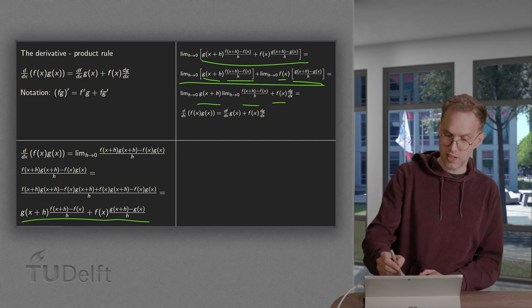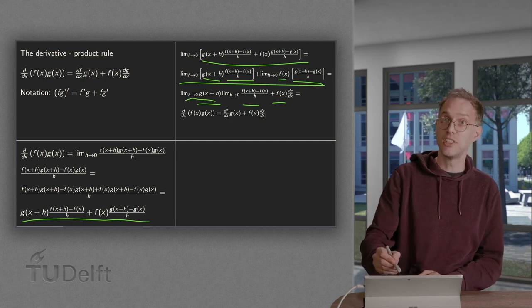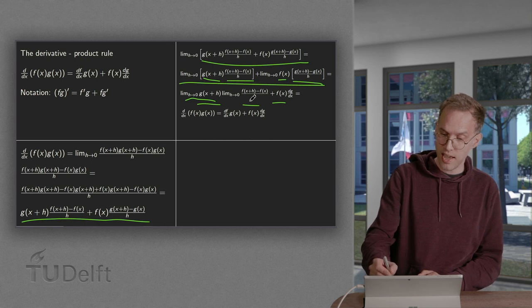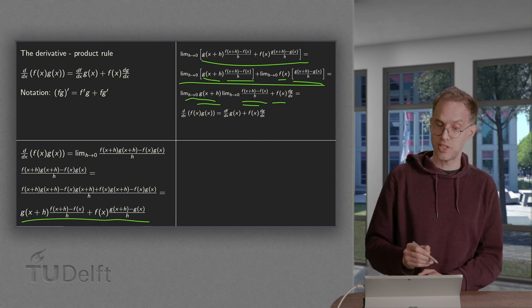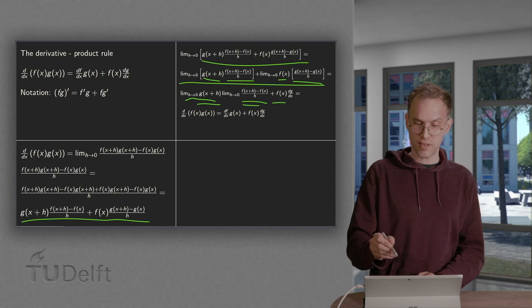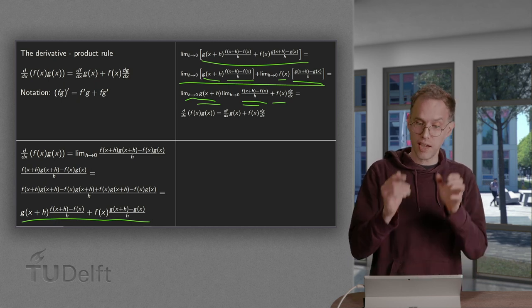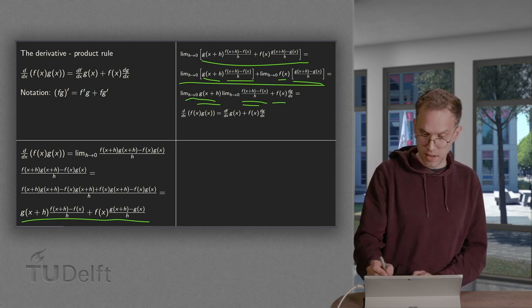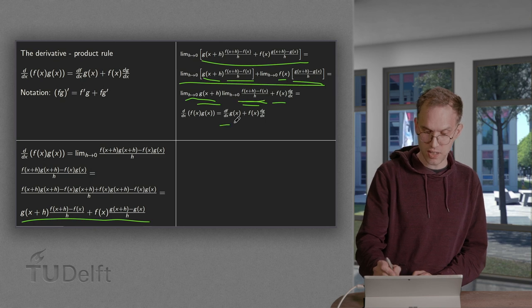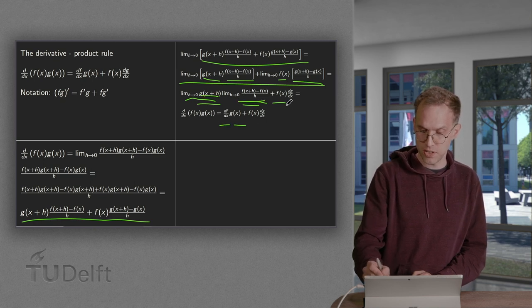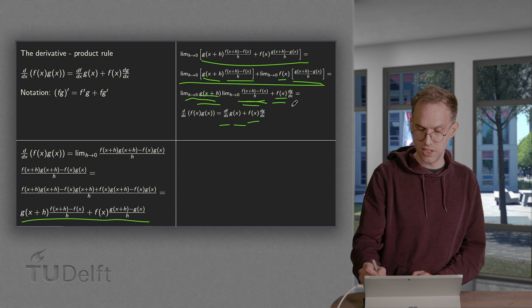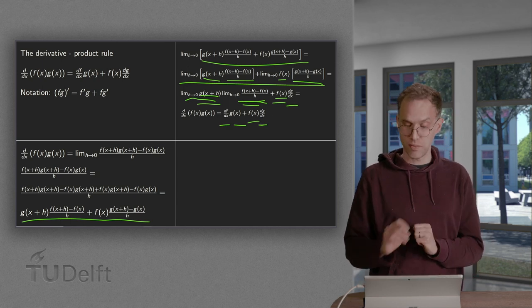And now finally we can take both limits here. Taking h to 0 just gives us g of x, and taking h to 0 over there gives us df/dx. So what we have is d/dx of f times g equals df/dx times g plus f times dg/dx. So there we have the proof.